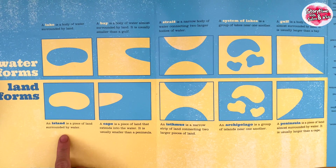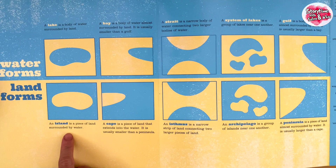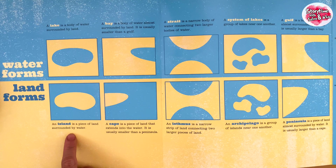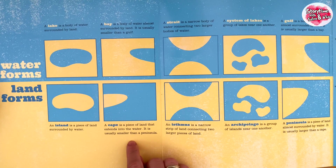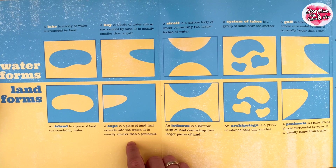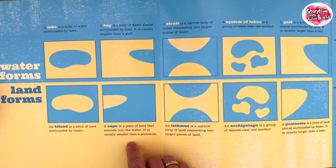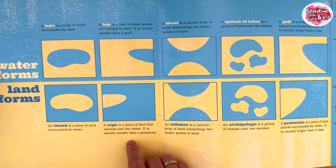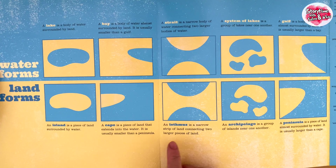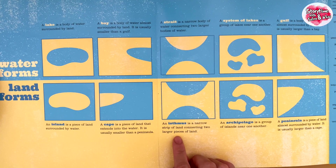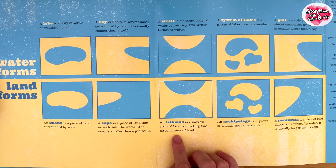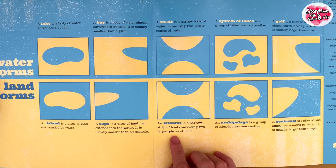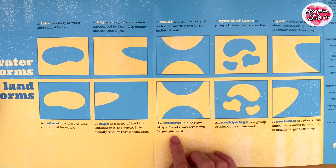Land Forms. An island is a piece of land surrounded by water. A cape is a piece of land that extends into the water. It is usually smaller than a peninsula. An isthmus is a narrow strip of land connecting two larger pieces of land.